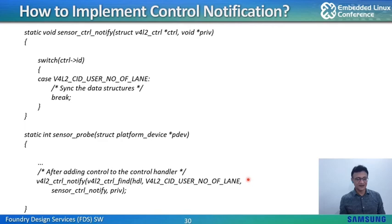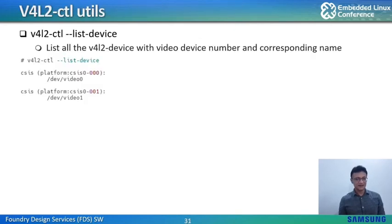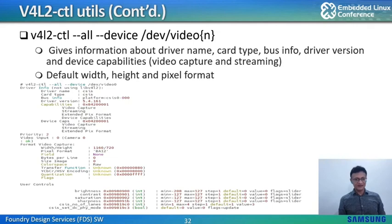Now we will look into the utilities provided for controls. The V4Lutils package provides a command-line tool to control the devices. The list-devices argument lists all V4L2 devices along with the video device number and device name. Driver and device information can be obtained by the --all argument followed by the device node name. The command can also be used to get or set the control value for the device node. The current value of all controls owned by a device can be specified by the log-status argument.